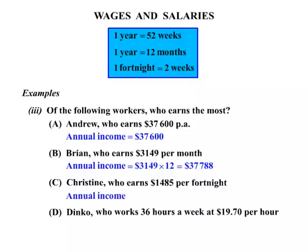Now the annual income for Christine. She's getting $14.85 per fortnight. We know there are 52 weeks in a year, and dividing 52 by 2 gives us 26 — so there are 26 fortnights in a year, which is also very useful to know. So we multiply $14.85 by 26 and we get $38,610.